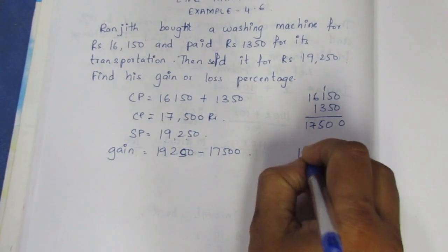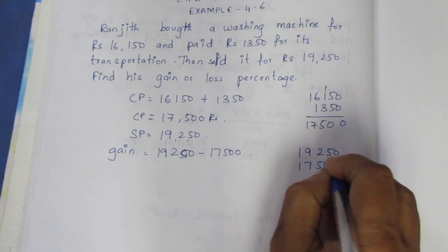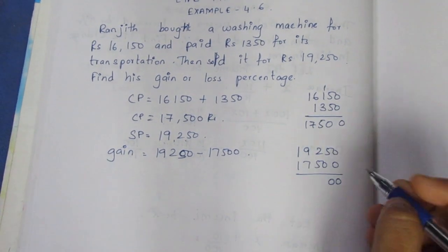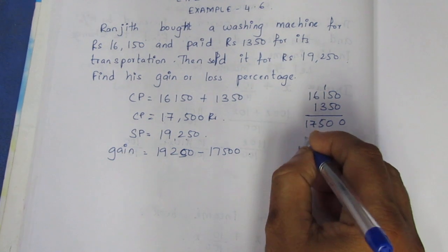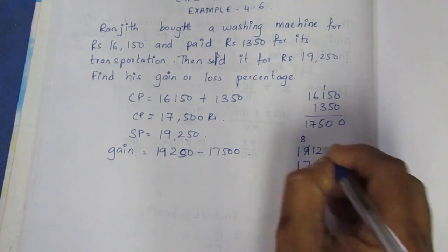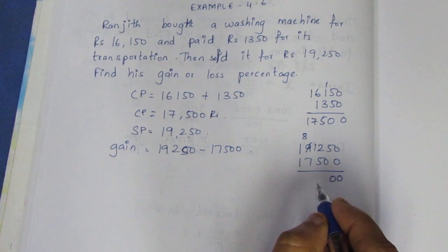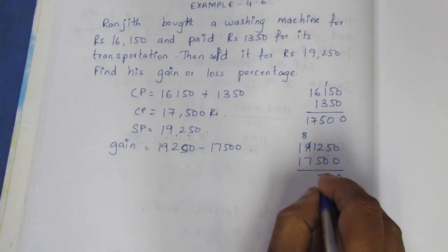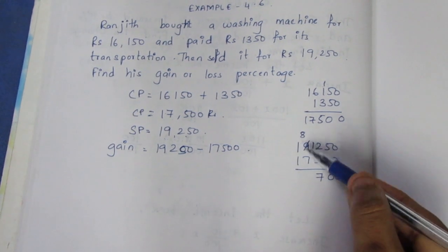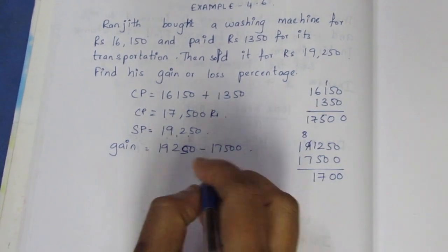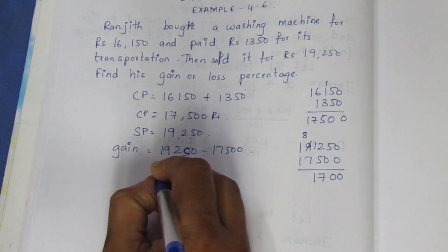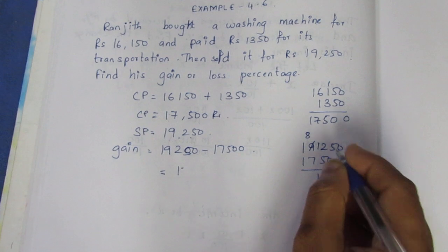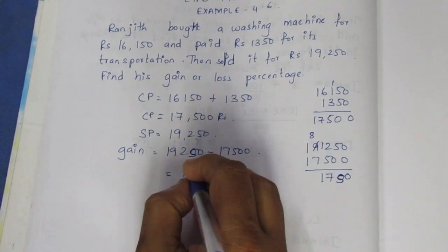Gain equals 19,250 minus 17,500. So it's 0, 5 minus 0 is 5, need to borrow for 2 minus 5, then 7, 1. So gain is 1,750.